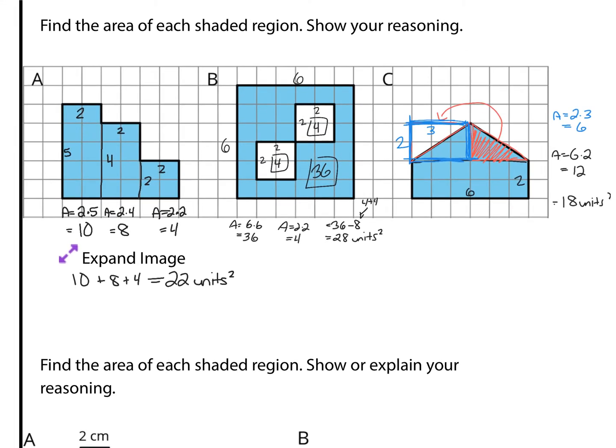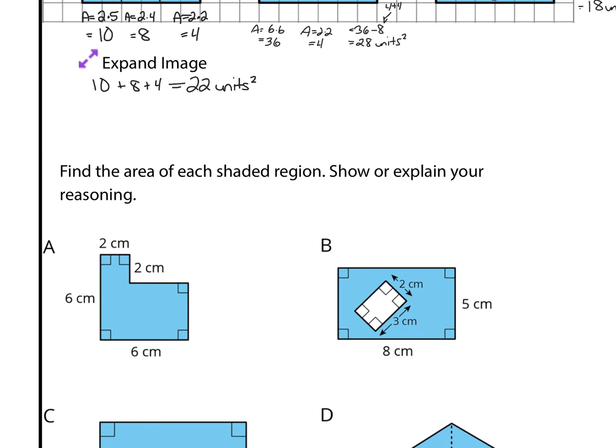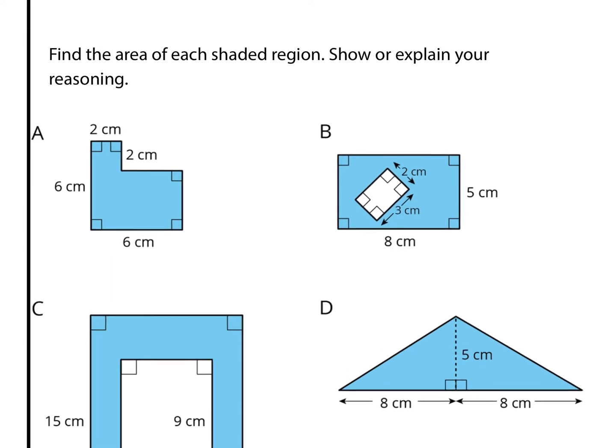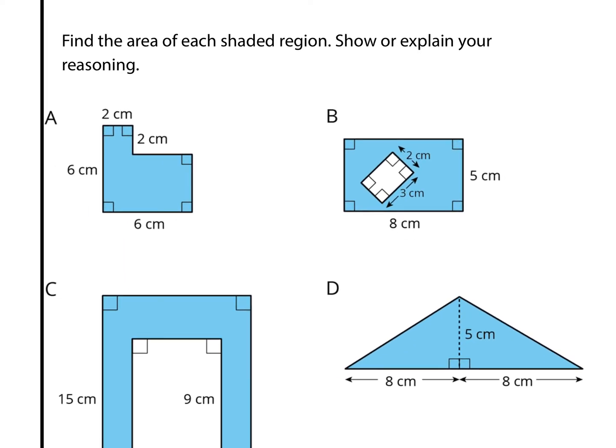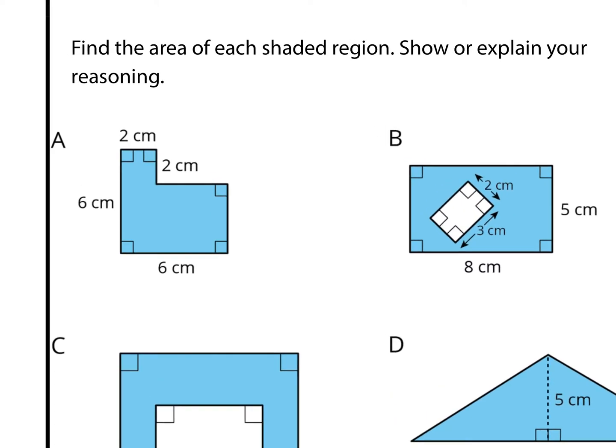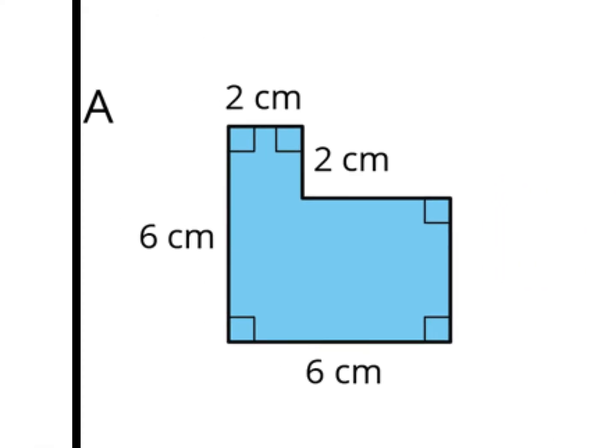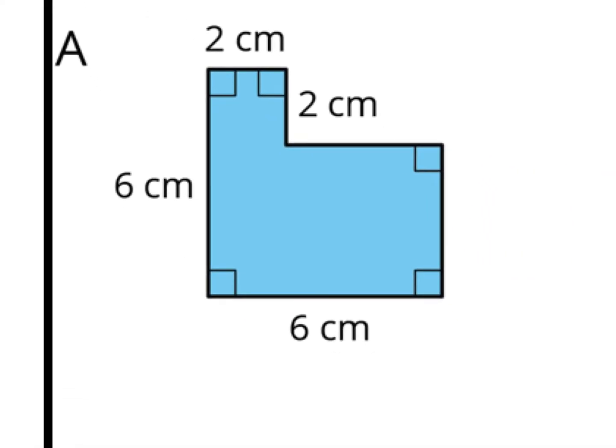Let's move on to question 2: find the area of each shaded region and show or explain your reasoning. Now we're off the grid, and we'll zoom in to A.